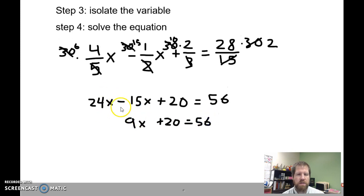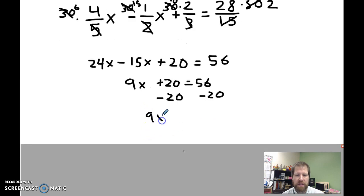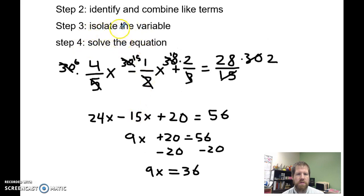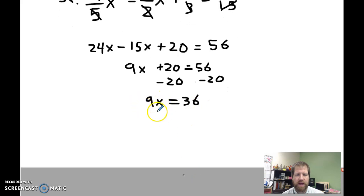I've combined my like terms. Now I'm going to isolate the variable by moving this 20, this constant, away from my variable. So I have 9x equals 56 minus 20, 36. And now I've isolated the variable. Now I've got to solve the equation. To do that, I've got to get x by itself. So I'm going to divide by 9, and x is equal to 36 over 9 or 4.